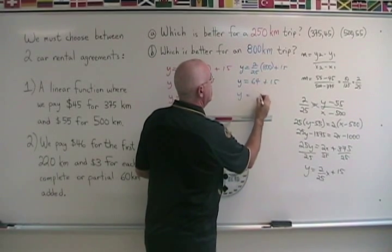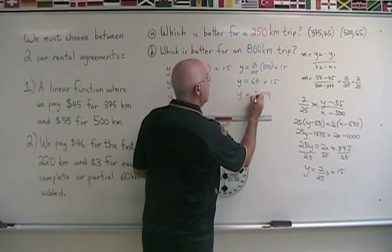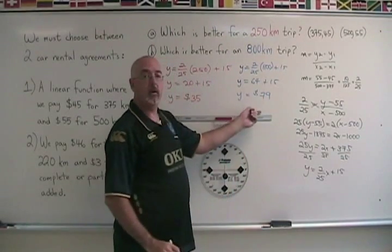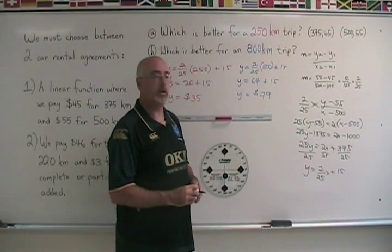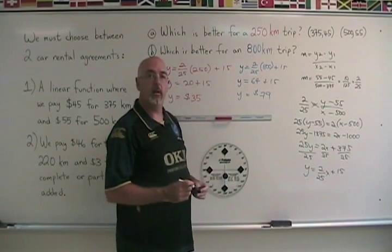So y is equal to 79, unit of measure dollars. It would cost us $79 to use car rental agreement number 1 for an 800 kilometer trip.